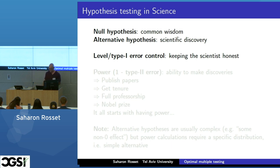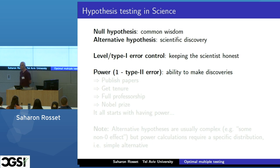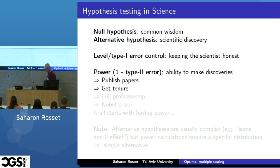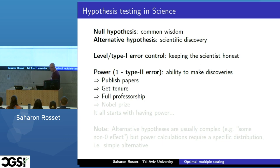But really as scientists, what we care about — or what we should care about — is the power of the test, or 1 minus the type 2 error, because the power of the test is our ability to actually make discoveries. And why do we want to make discoveries? Because if we make discoveries, we publish papers. If we publish papers, we get tenure. Then we can get full professorship if we keep publishing papers.